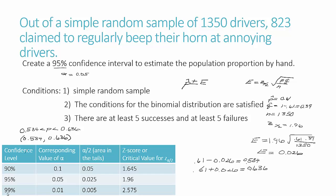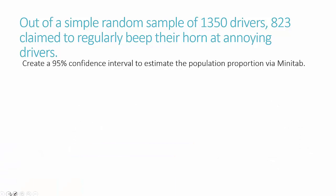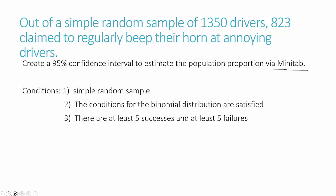Now let's look at the same question using Minitab. We have the exact same information and question; this time we go to Minitab to do the calculations rather than by hand. We know it's a simple random sample and the binomial conditions are satisfied. We don't have to worry about the normal approximation condition because Minitab has the option to truly use the binomial instead of approximating it. We'll get a slightly different — and slightly better — answer because we are using the exact binomial.